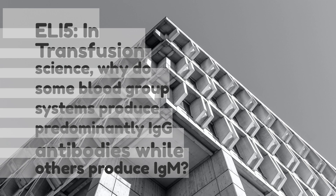ELI5 in Transfusion Science: Why do some blood group systems produce predominantly IgG antibodies while others produce IgM?